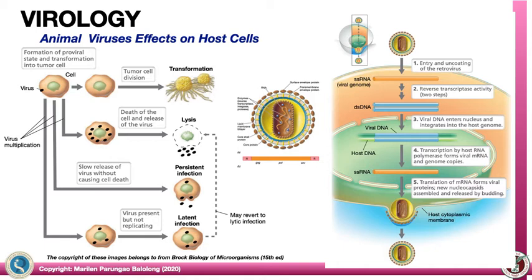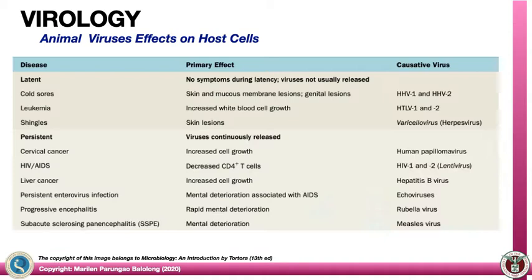The typical life cycle of HIV: as an animal virus, it would enter and uncoat the cell. Once inside, it carries its own reverse transcriptase enzyme, which allows the virus to transform its single-stranded RNA genome into double-stranded DNA, which can be integrated into the host genome. After that, it will be transcribed by the host and produce several copies of the virus.